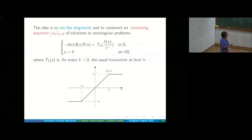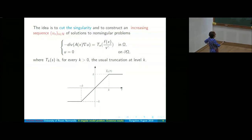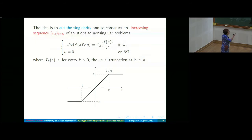How do they cut the singularity? More or less everybody cuts like this. You have a truncation function T_K which equals X for |X| ≤ K, cut at level K for values bigger than K, and at level -K for negative values. So T_K(t) is bounded by K for every K.